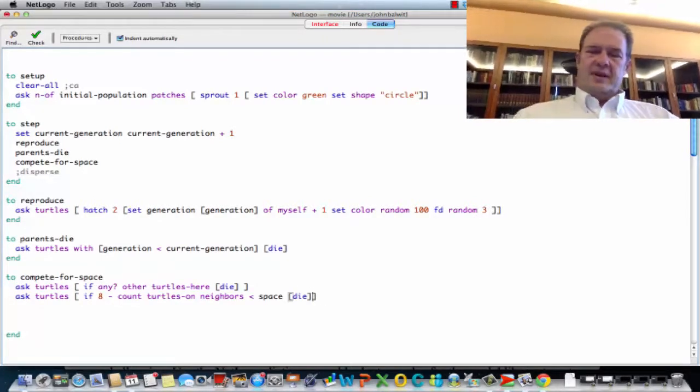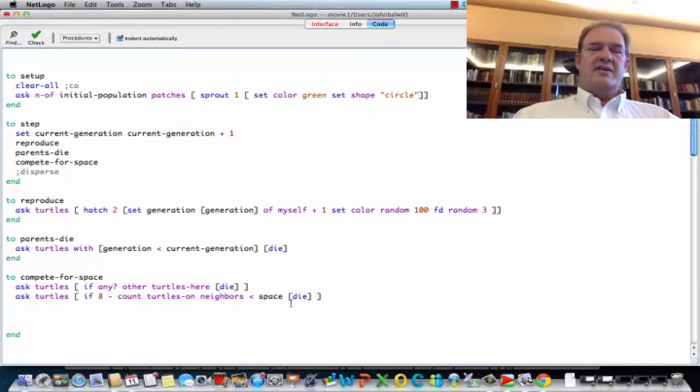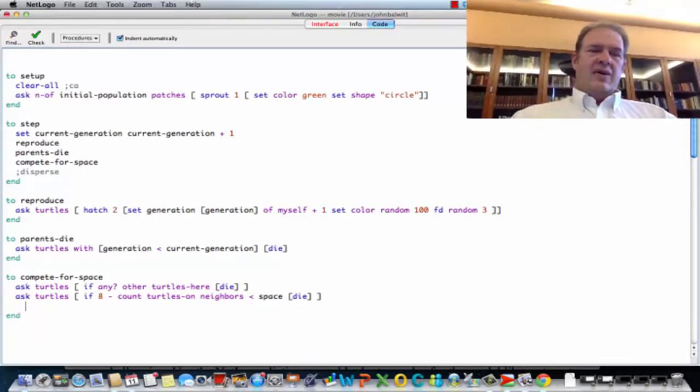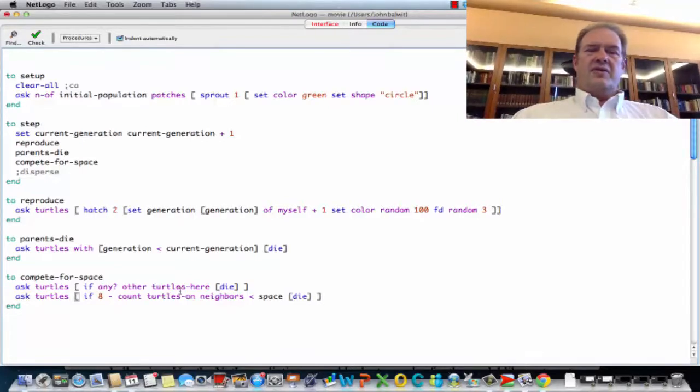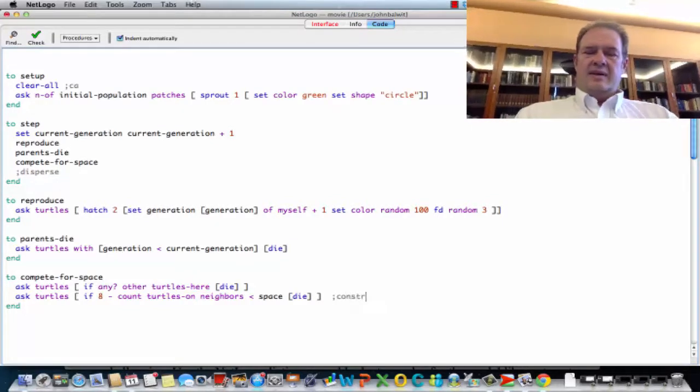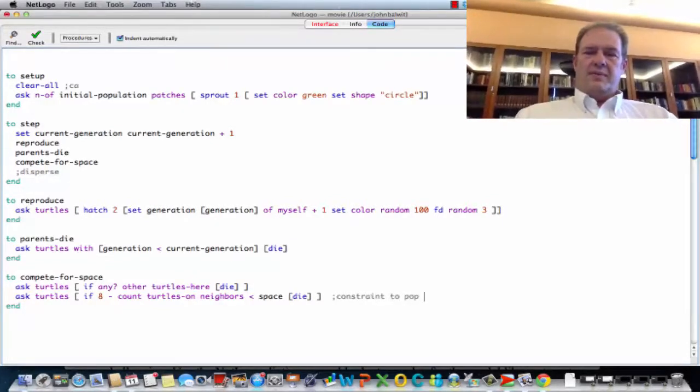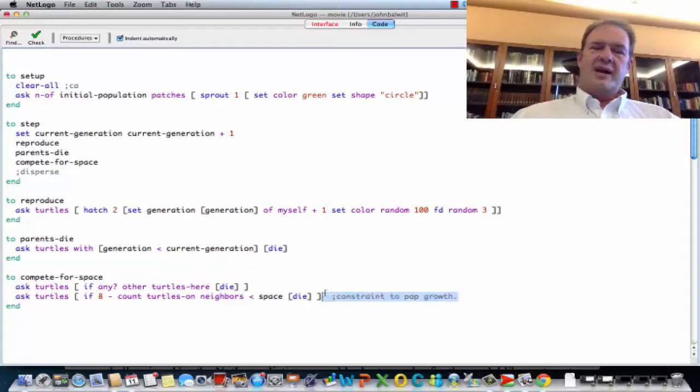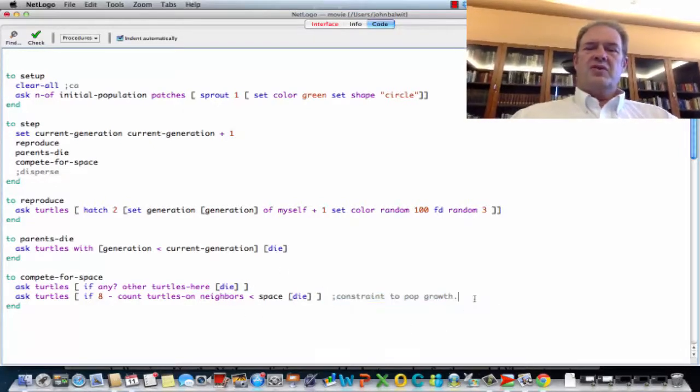So obviously, if a turtle needs eight spaces in order to live, they're going to have to be very thinly populated. So you can kind of think of that as a resource that constrains the growth of this population. So I'm going to make a note here. Constraint to pop growth. I'm just doing this to illustrate that throughout this, we probably should be adding comments so that other people can understand our code and so that if we come back to this later, we can understand what the parts of the code do.